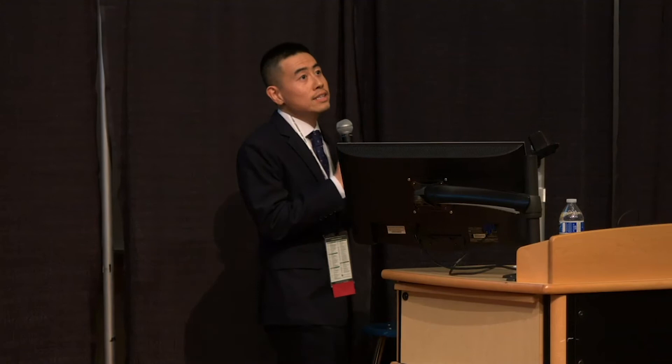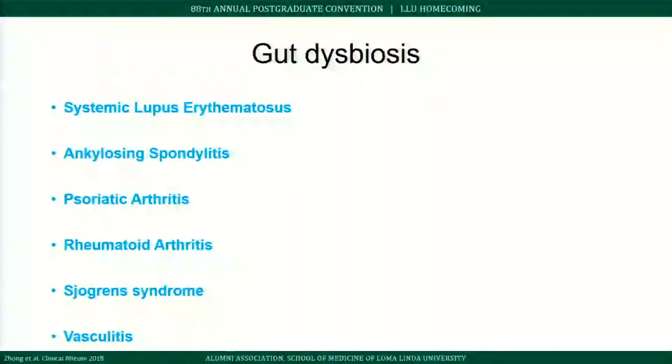Gut dysbiosis — an imbalance in gut microbiota — is found in several autoimmune rheumatologic diseases, including lupus, ankylosing spondylitis, and various vasculitides.